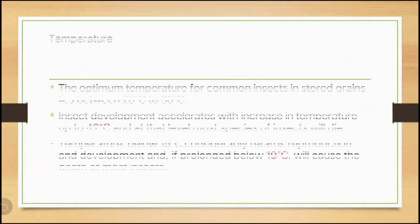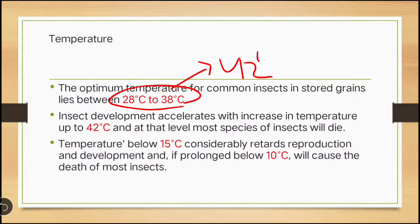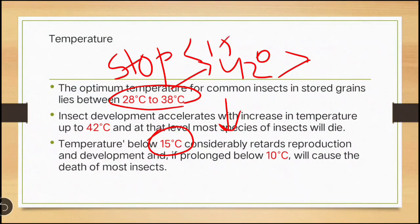Next we will see temperature and how it affects storage. Normally, insects require a temperature of 28 to 38 degrees Celsius, and they can develop up to 42 degrees Celsius. Most insects will die above 42 degrees Celsius. If the temperature goes below 15 degrees Celsius, the growth and development of the insect will stop. Below 10 degrees Celsius, the insect will die.